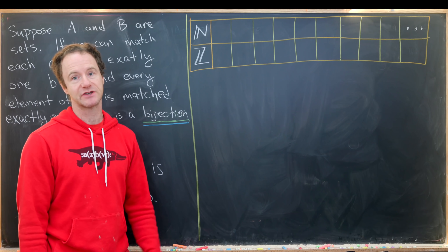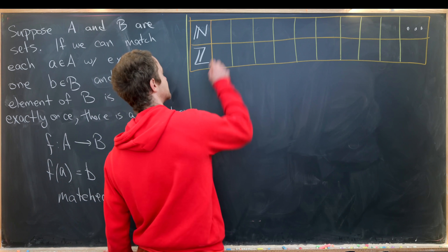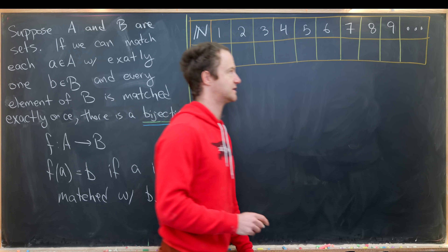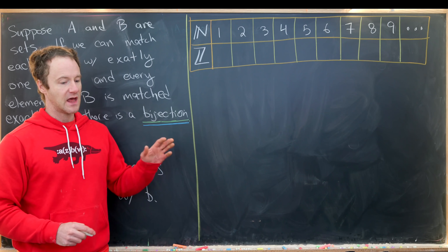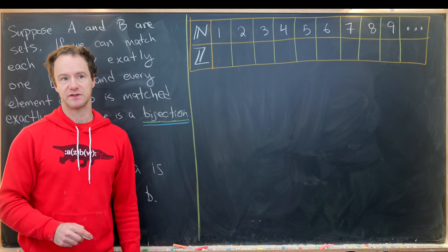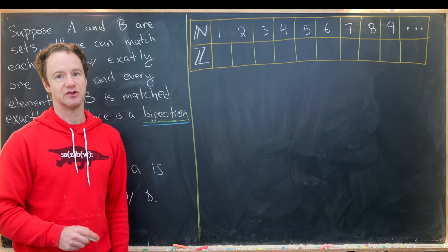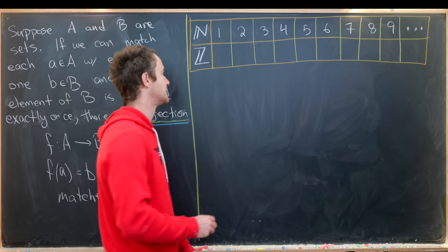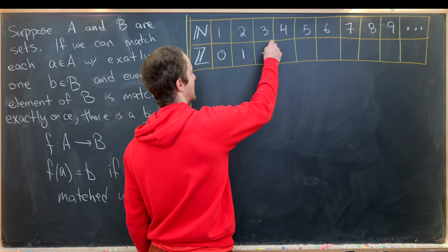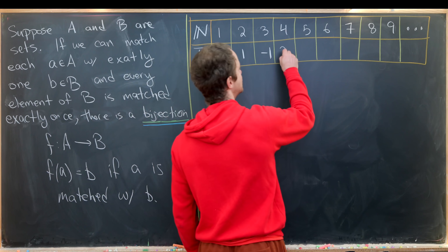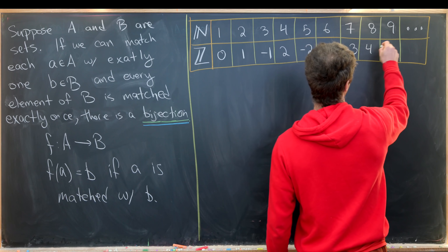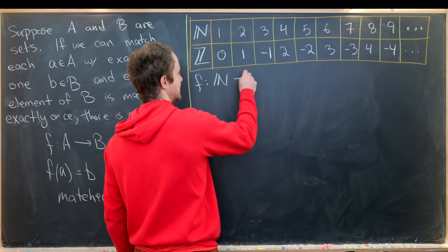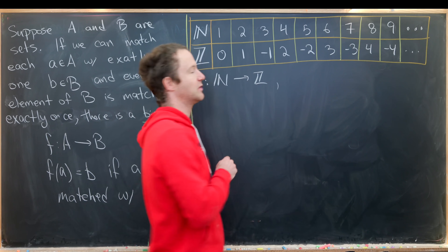Let's start by listing all the natural numbers — the positive integers: 1, 2, 3, 4, 5, 6, 7, 8, 9, and so on. Now we could haphazardly write the integers, but let's do this systematically. We'll work out from the middle, which is zero: 0, 1, -1, 2, -2, 3, -3, 4, -4, and so on. So we have defined a function from ℕ to ℤ, and we know the first few values: f(1)=0, f(2)=1, f(3)=-1, f(4)=2, and so on.